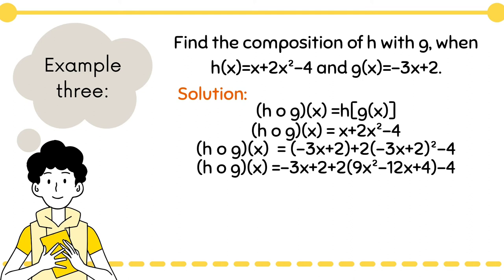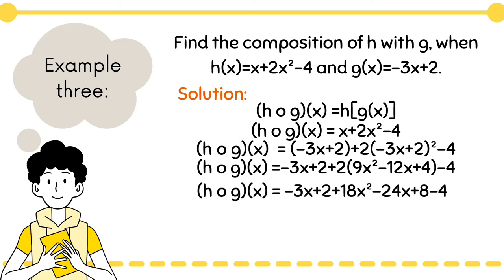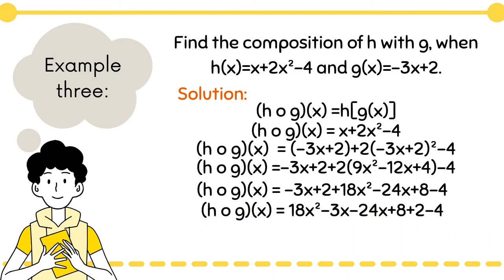Next, simplify the term with the exponent using the FOIL method. Our equation becomes (−3x + 2) + 2(9x² − 12x + 4) − 4. Distribute 2 to get (−3x + 2) + 18x² − 24x + 8 − 4. Arrange and simplify the values. Therefore, the composition of h with g is 18x² − 27x + 6.